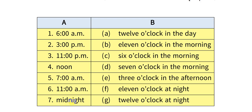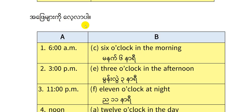12 am, so we are going to be 12 pm. Then Column A, Column B, A to G: 12 o'clock in the day, 12 o'clock in the morning, 11 o'clock in the morning, 7 o'clock in the morning, 6 o'clock in the morning, 3 o'clock in the afternoon, 11 o'clock at night, 12 o'clock at night, 7 o'clock in the morning.